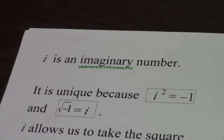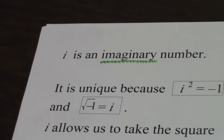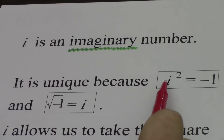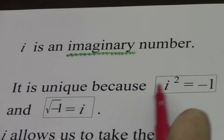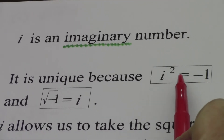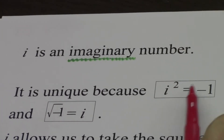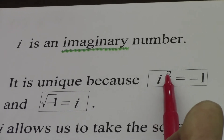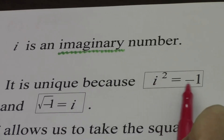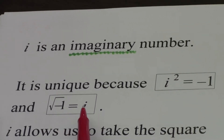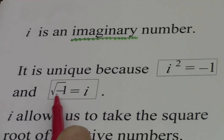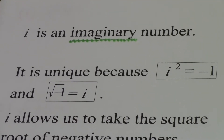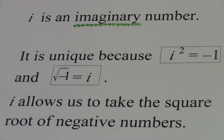To answer question one: i is an imaginary number, and its special properties are two-fold — and both are related. The first is that i squared is the only number that can equal a negative: i squared equals negative one. And if you square root both sides of that equation, you get i equals the square root of negative one. These go hand in hand — they're related equations, and that's what's unique about i.